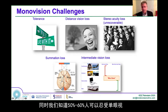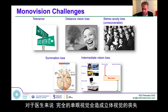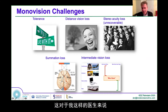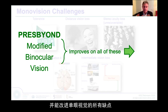Monovision has challenges of its own. About 50–60% of people tolerate monovision. There are various reasons why monovision is not ideal, and we're talking about surgeons choosing surgery for their own eyes. Full monovision can lead to loss of stereo acuity, and that's something not desirable for eye surgeons. Presbyond modifies the binocular vision of the eye and improves on all of these disadvantages of monovision.